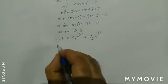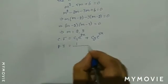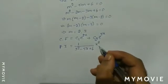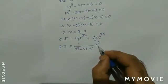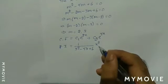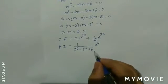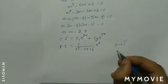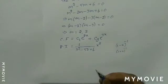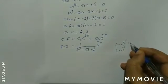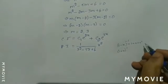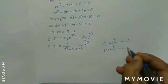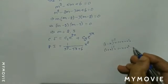Now, to find the particular integral, PI equal to 1 over (D squared minus 5D plus 6) into x squared. Since the right-hand side is in the form of a polynomial, we have to bring the denominator in terms of (1 minus x) raised to minus 1 or (1 plus x) raised to minus 1, where (1 minus x) raised to minus 1 equals 1 plus x plus x squared plus x cubed, and (1 plus x) raised to minus 1 equals 1 minus x plus x squared minus x cubed, and so on.